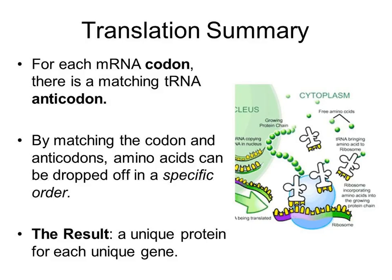Key points: for every codon you have a matching anticodon, which means you have a matching amino acid, so amino acids are dropped off in a specific order. That means every protein created from a specific messenger RNA sequence should be the exact same protein, because all those amino acids have different chemical properties that affect how the protein folds. Every gene will create at least one unique protein, but we'll go on to talk about how that can be spliced up so you can actually get many proteins from a single gene.